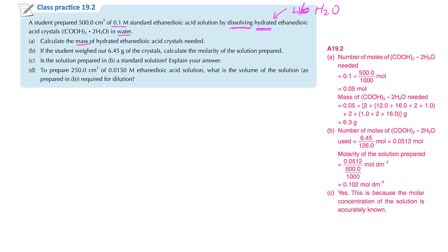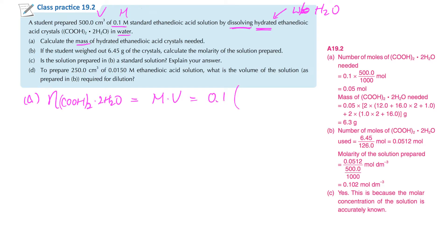For the first part, you have to calculate the mass of hydrated ethanedioic acid. You have M and V given here. First of all, calculate the number of moles. The number of moles of (COOH)₂·2H₂O equals M times V, which will be 0.1 times 500/1000. So the first part gives us 0.05 mol.